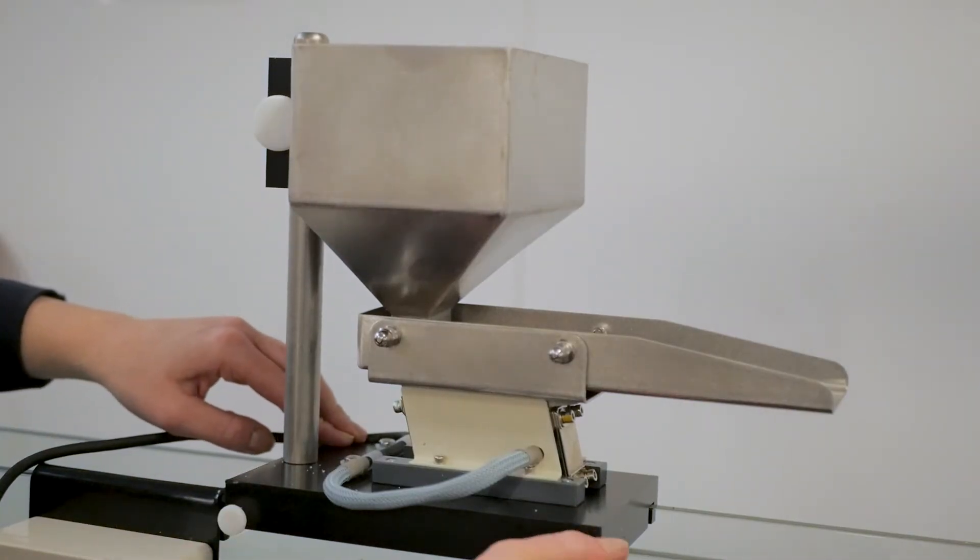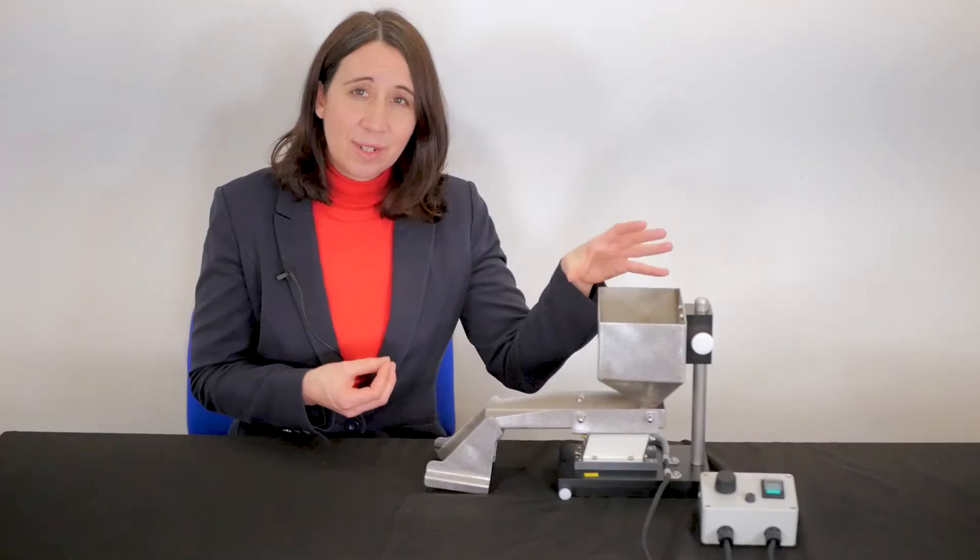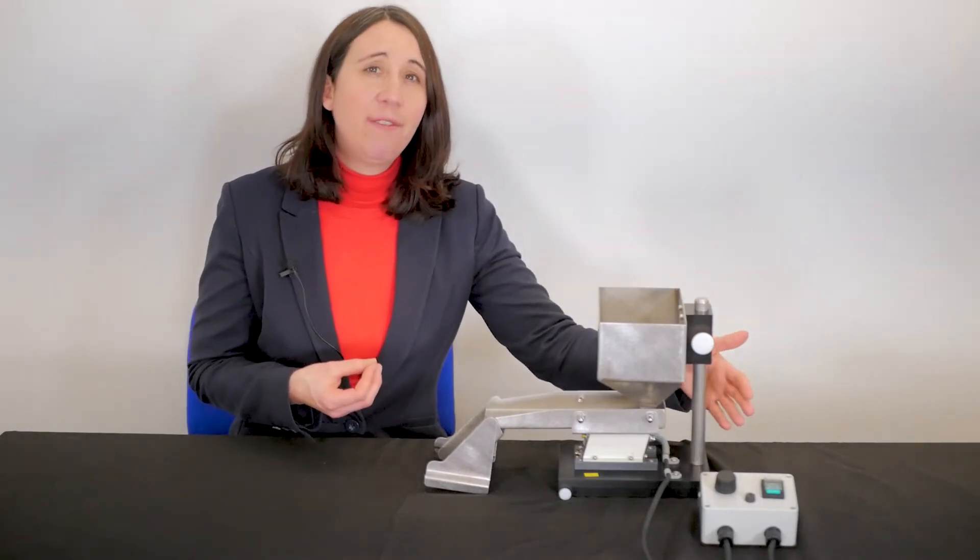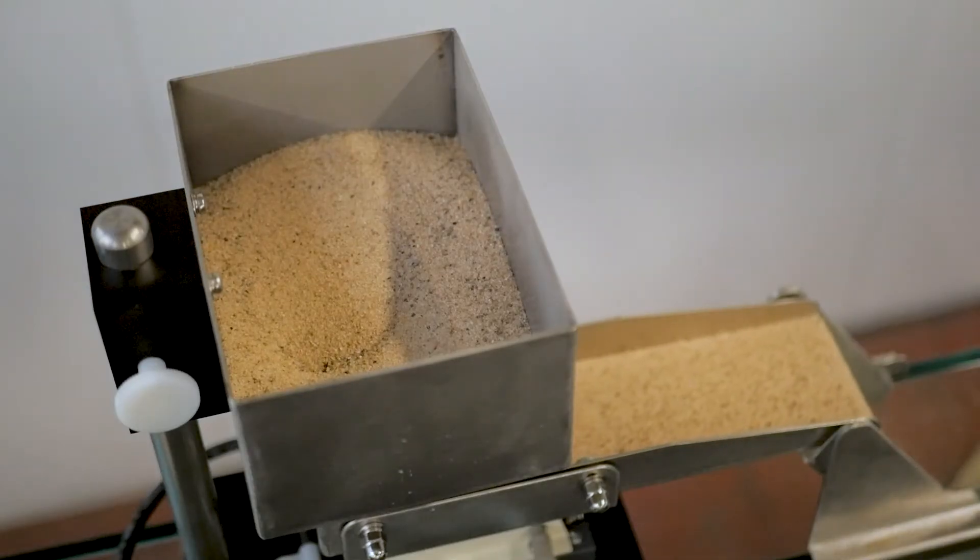At the top is the hopper where up to three kilograms of dry sand or sediment of choice is stored. This is mounted on a shaft which can be adjusted using the thumb screws. The height of the hopper determines the rate that the sand is fed into the channel.